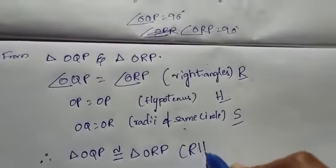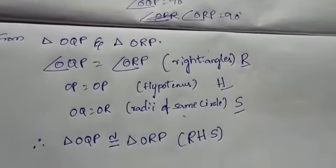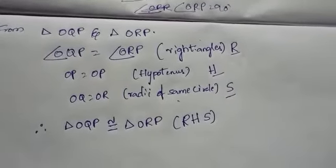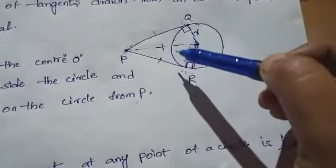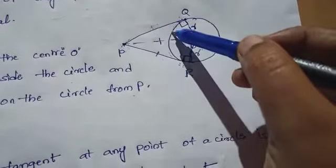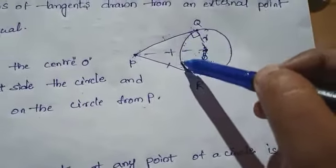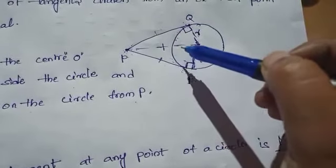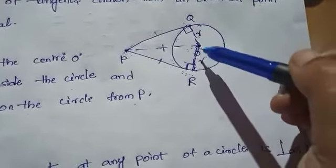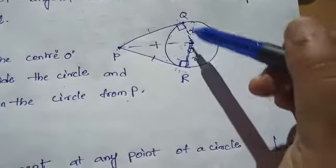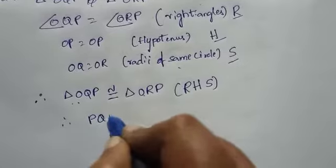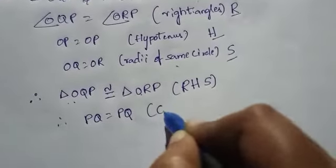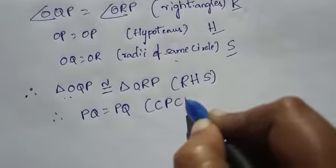Using Right Angle-Hypotenuse-Side congruency, these two triangles are congruent. Since corresponding sides of congruent triangles are equal, and we know OP equals OP and OQ equals OR, therefore PQ equals PR. Using corresponding parts of congruent triangles (CPCT), PQ equals PR.